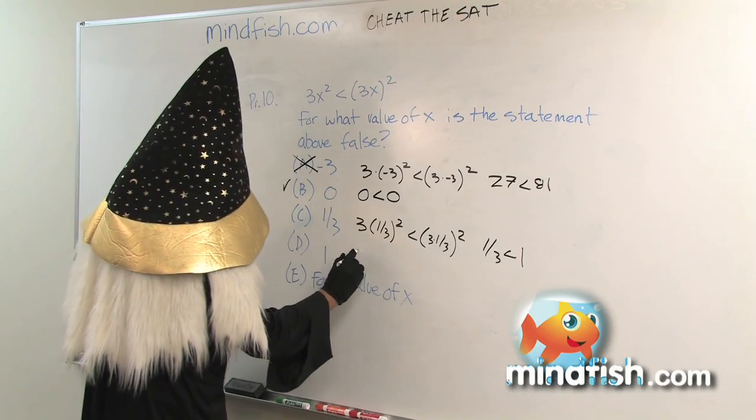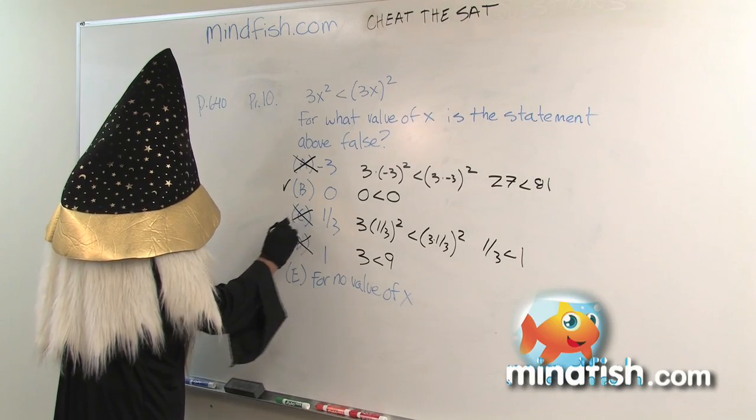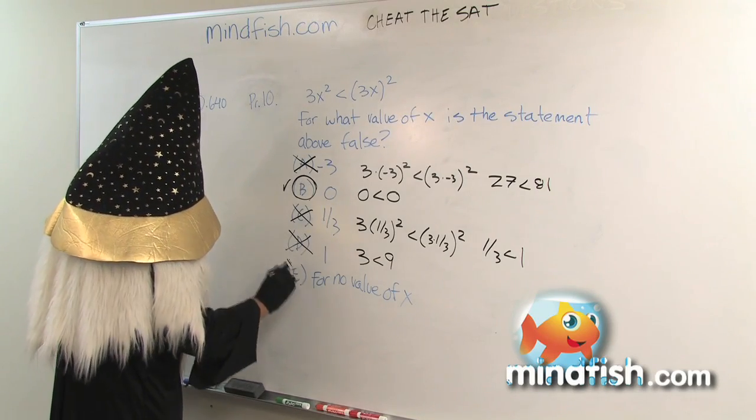When we put in 1, we're going to get 3 is less than 9. That's true. So we know that these answers are wrong, and since 0 did work, that is our answer.